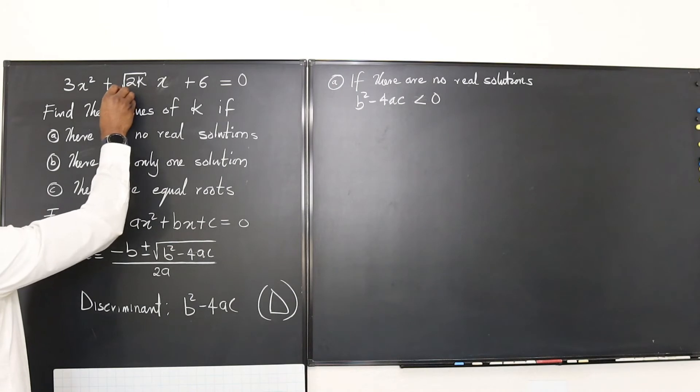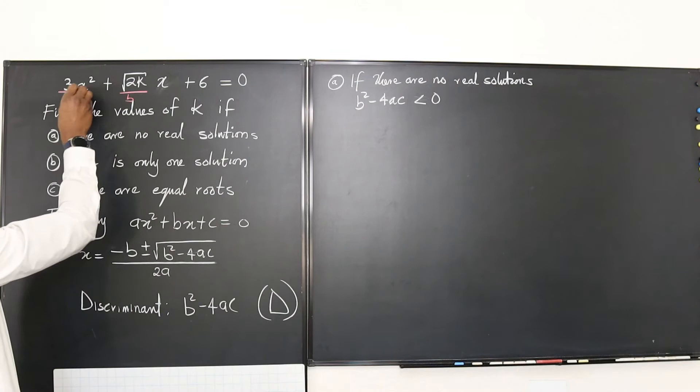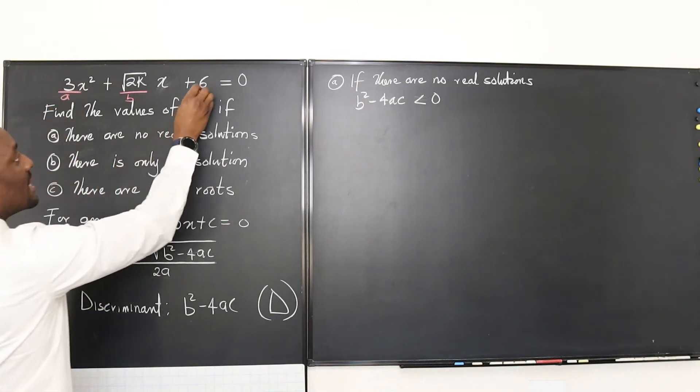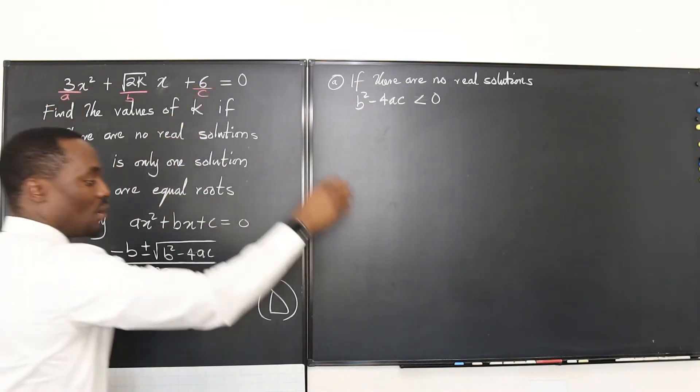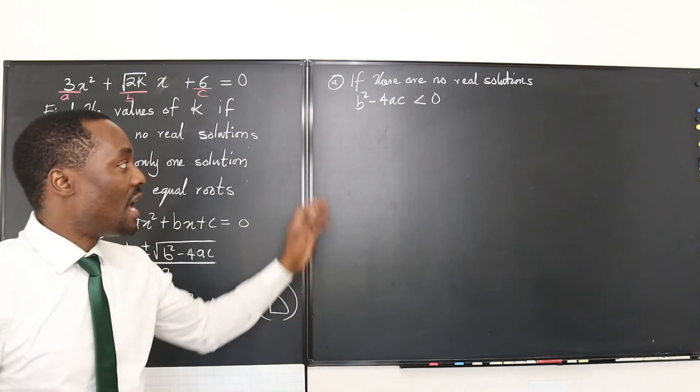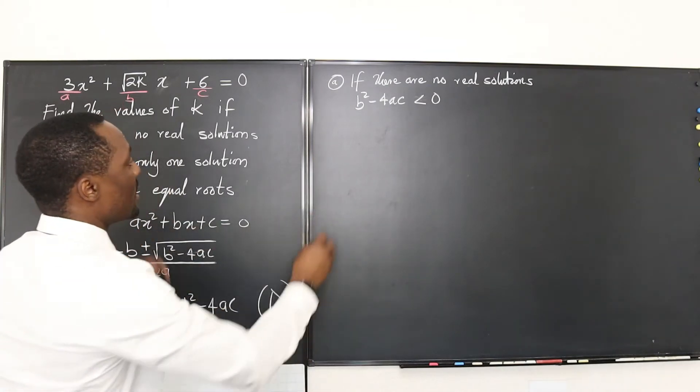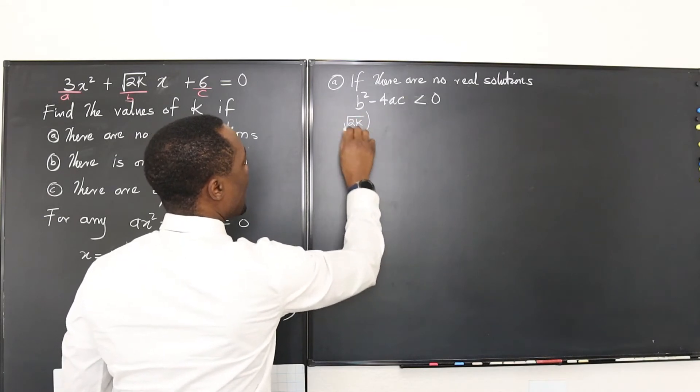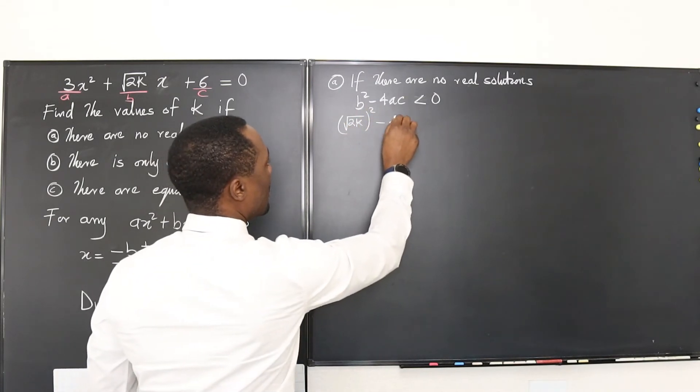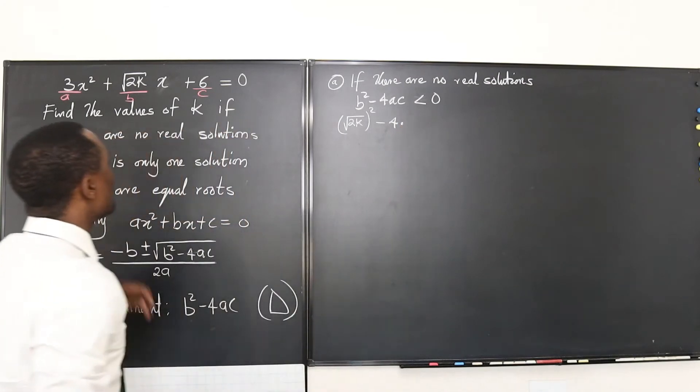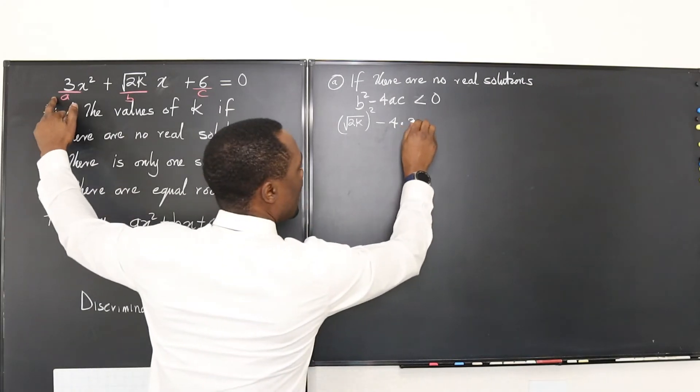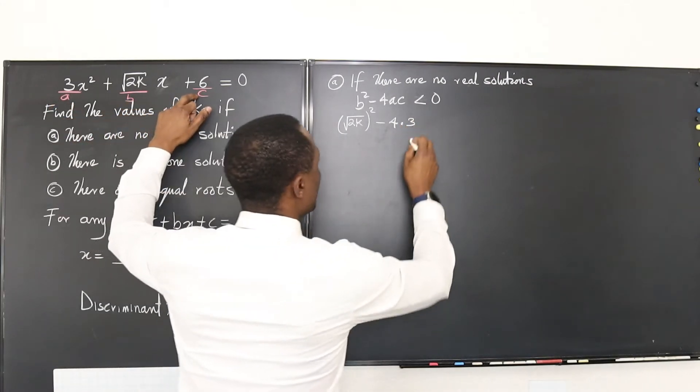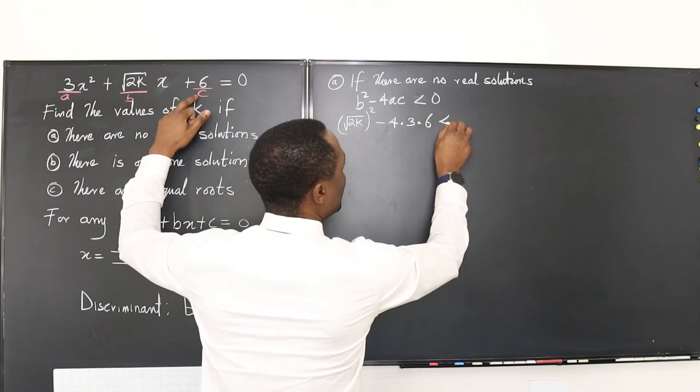So let's go back to the quadratic equation and identify what a is, what c is, and what b is. Right now, this is our b. I'm going to write b here. This line here is b, I mean square root of 2k. This is our a and this is our c. So we can go in here and plug in those numbers and see what we're going to get. So b squared will be 2k. We're at 2k squared minus 4 times a. What is a? A is 3. And what is c? c is 6.